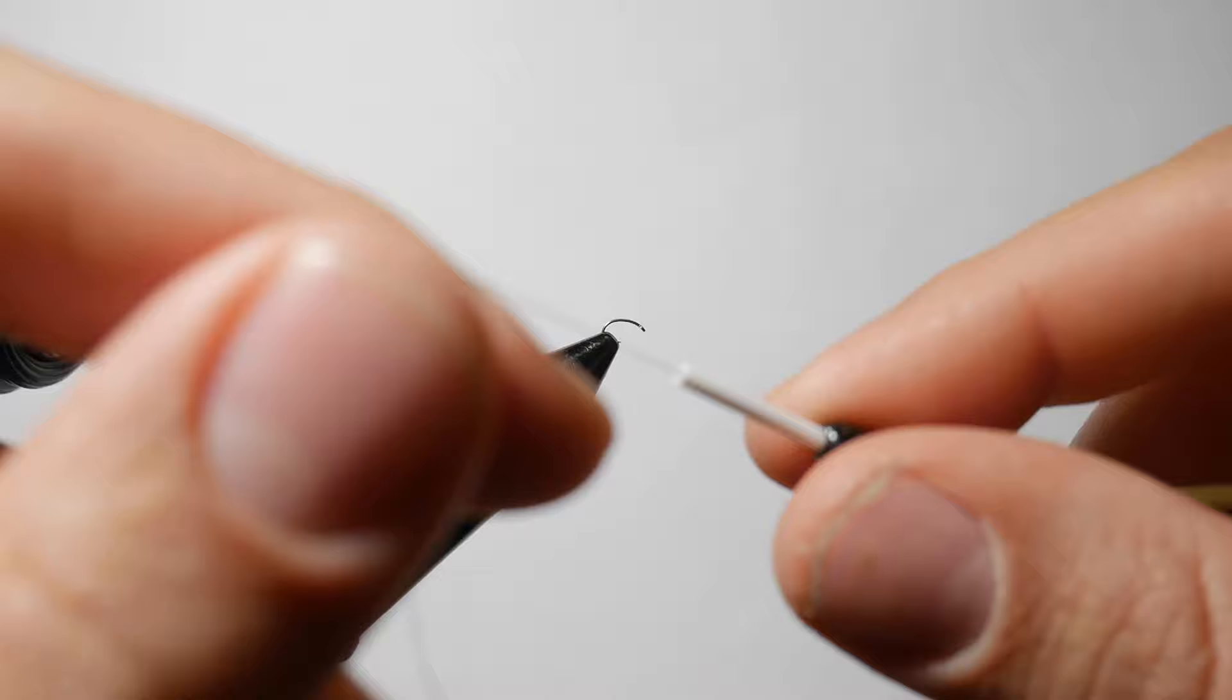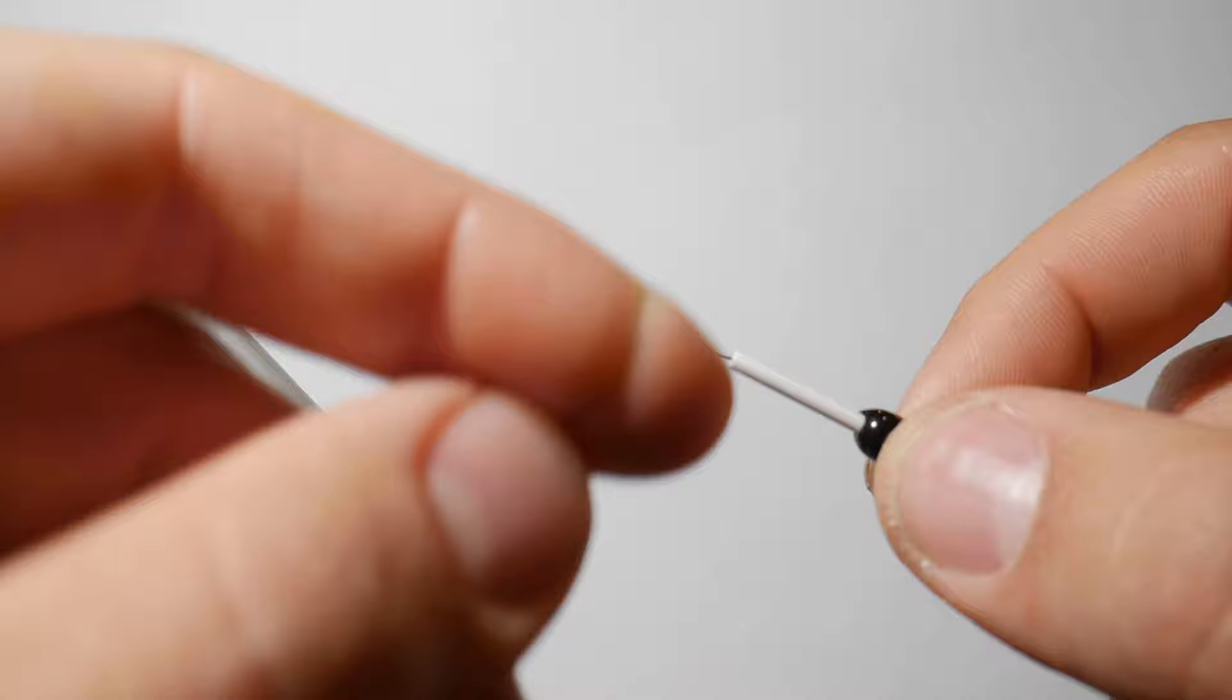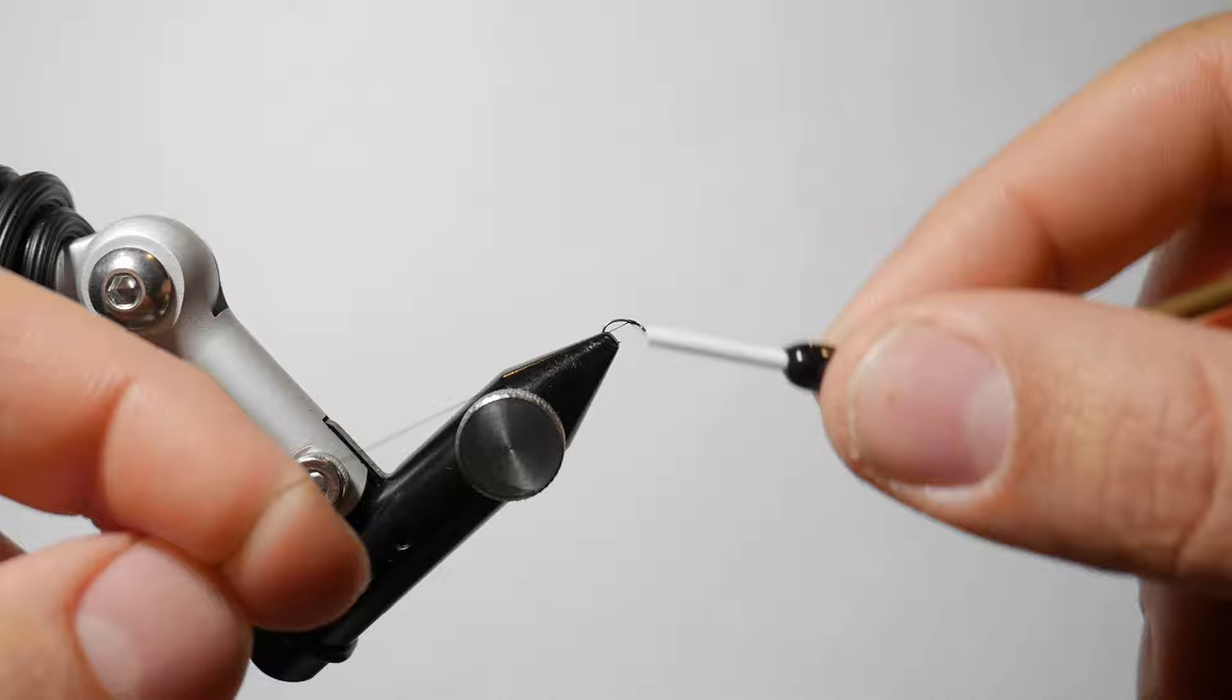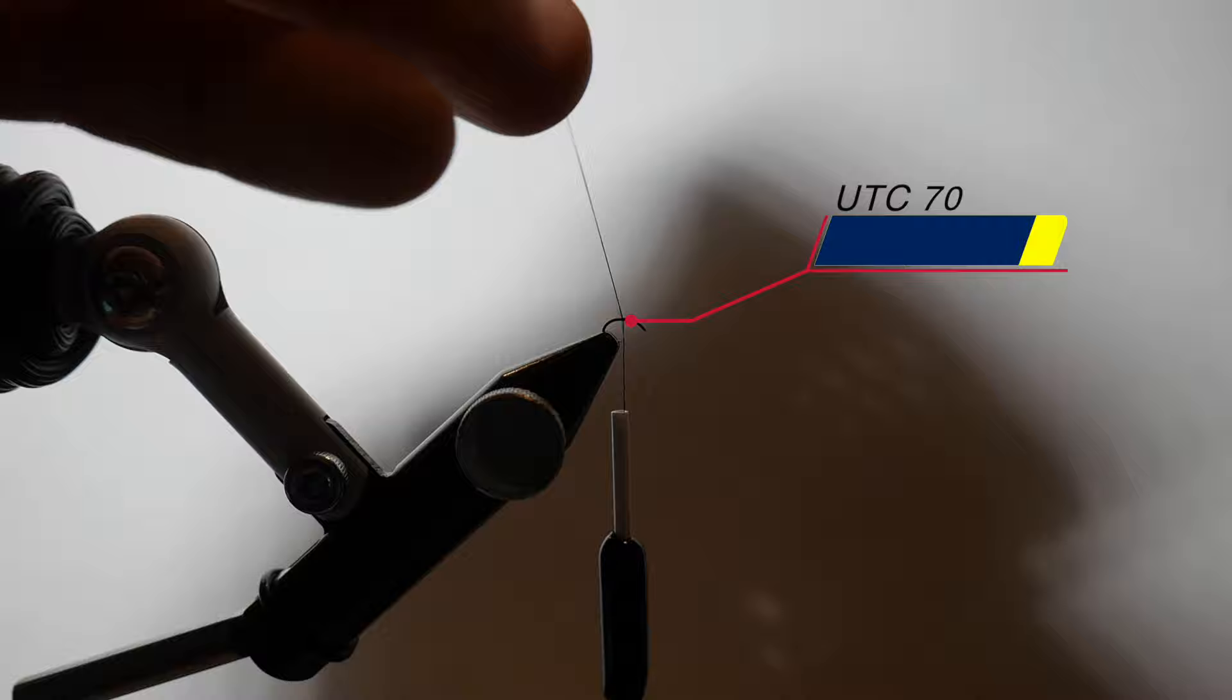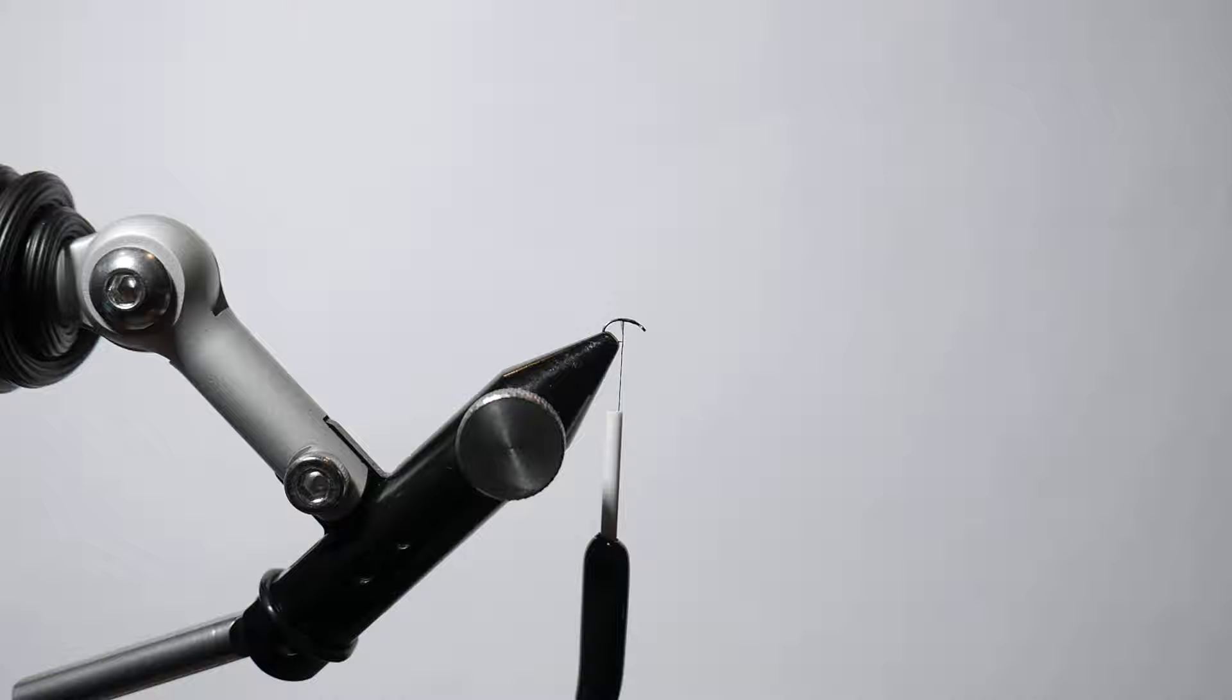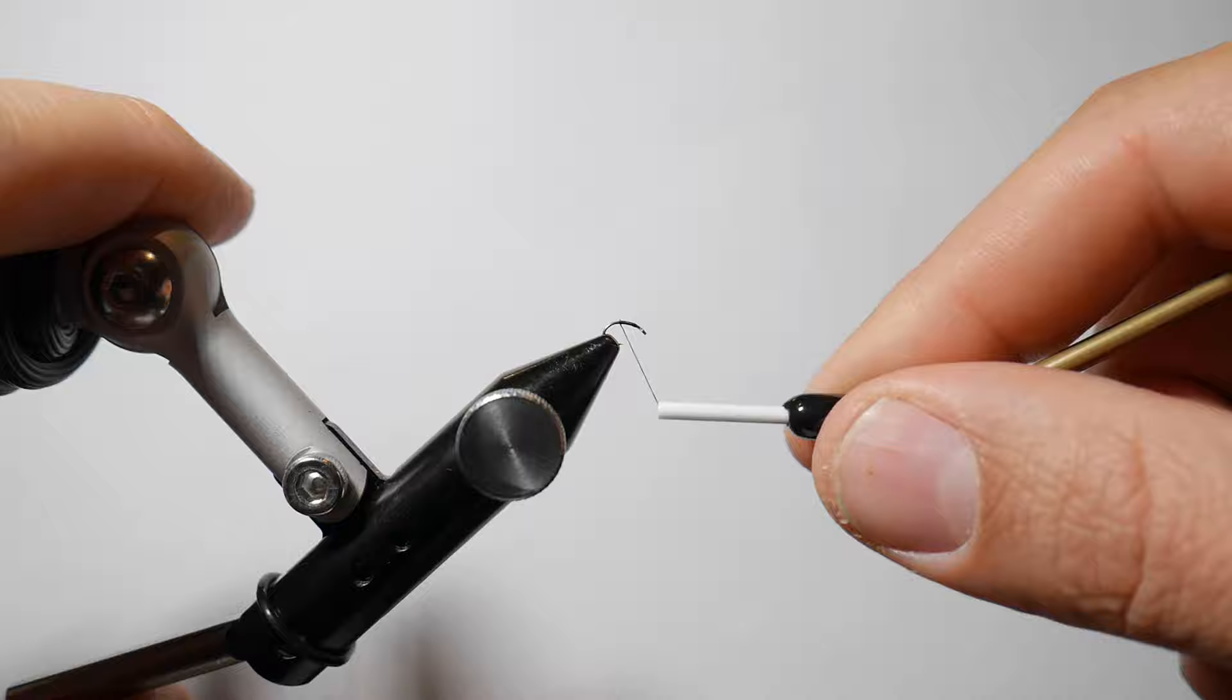So what I'm going to tie on now is 70 denier UTC black thread and I'm going to start it about a hook eye behind the eye of the hook. I'm going to stop right about here and cut this tag off, snip it close. And then we are going to continue down to just about the barb of the hook.